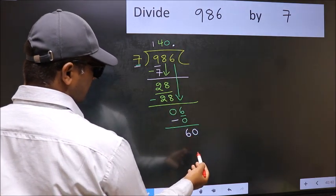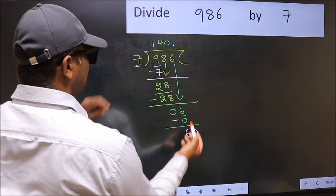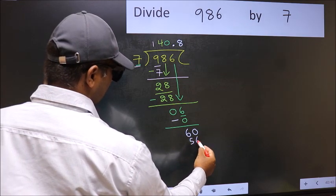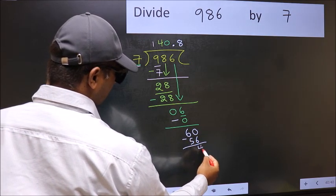So 60. A number close to 60 in 7 table is 7, 8, 56. Now you should subtract, you get 4.